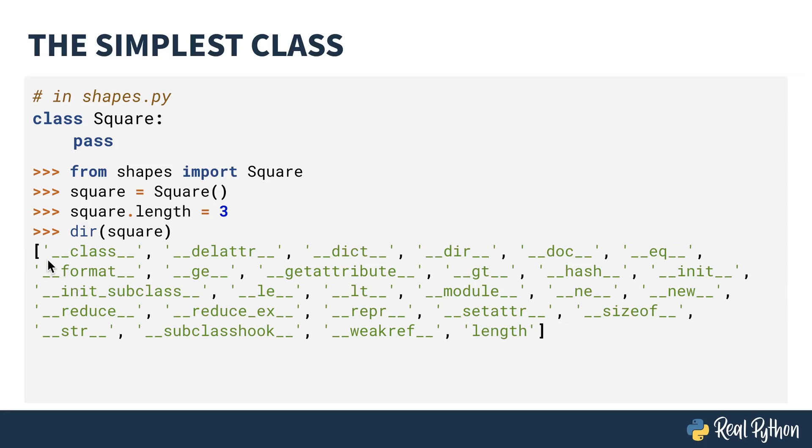In the top left, there's a special method, double underscore class, that contains information about the class the object came from. If I look at that now in the REPL, it produces a class object that says this is a square. You can always figure out what class an object comes from by examining this property.